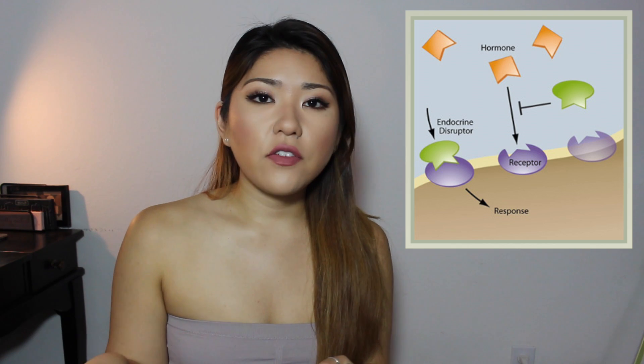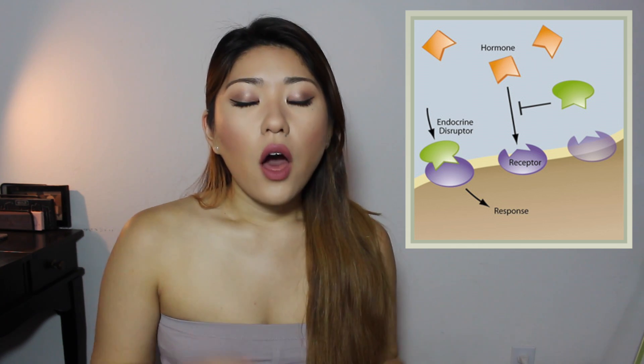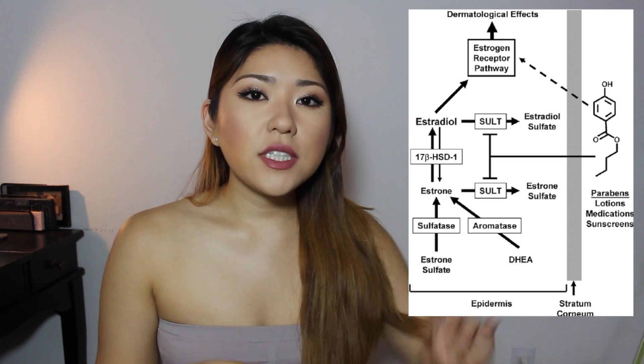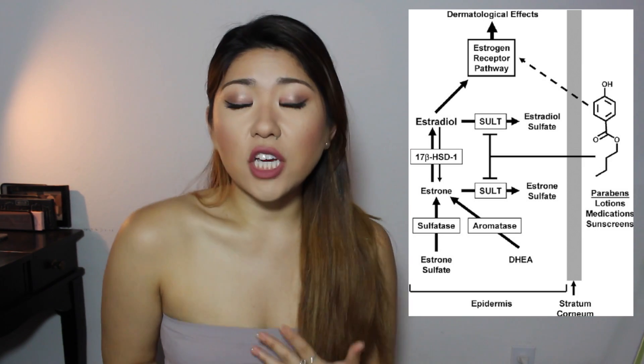Going back to estrogen: estrogen is the female hormone that makes females women — it's involved with breast development and reproductive organs. Estrogen works by binding to its own receptors, and those receptors trigger a series of actions that produce the hormones responsible for those physical characteristics. Parabens have actually been known to weakly bind to those same receptors that estrogen usually binds to. Which means that even a weak binding still has a chance of activating those same signals and pathways that make changes in your body.